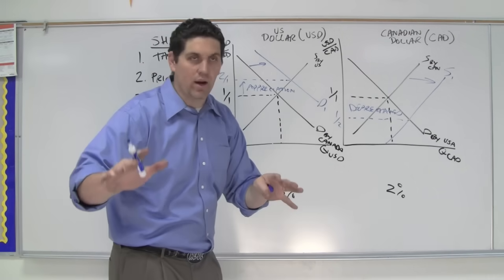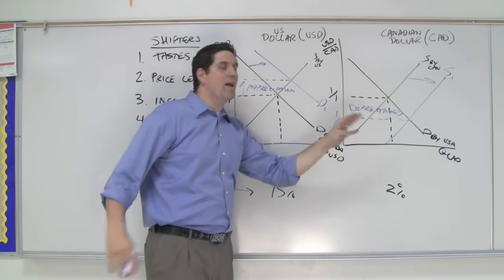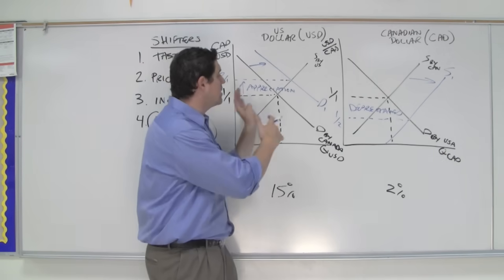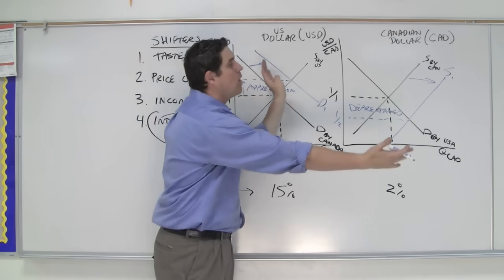Now I'm going to give you a rule here. Demand and supply always increase or decrease together. If one country wants another currency's currency, they've got to supply more of their currency to do it.